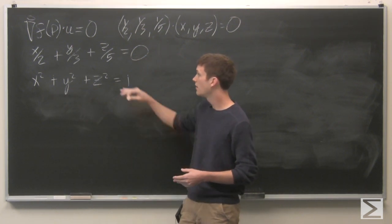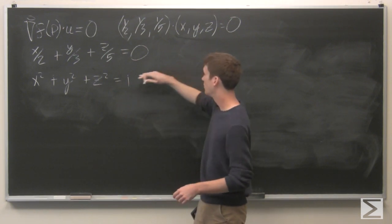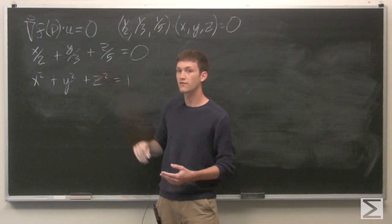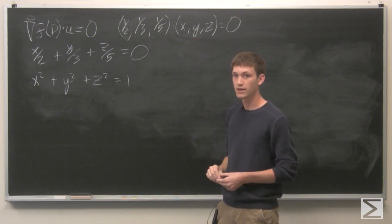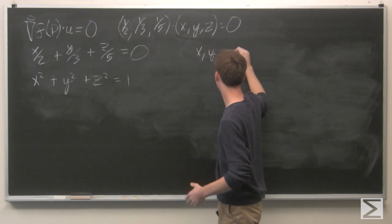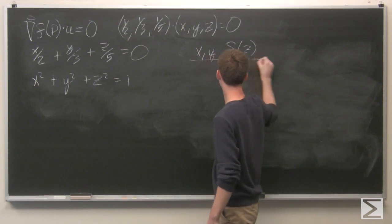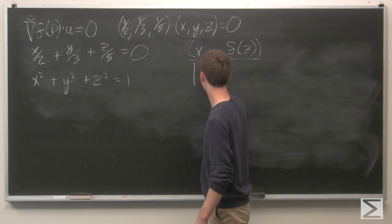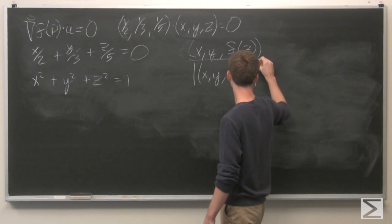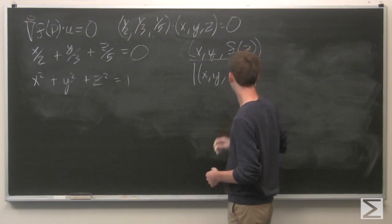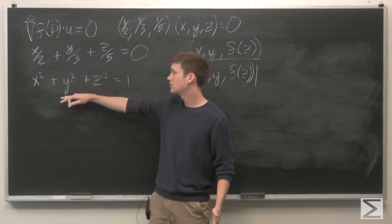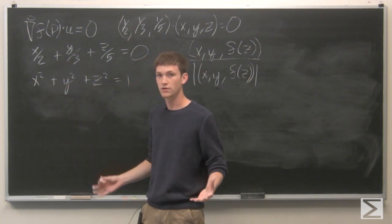We could leave it at that, or we could also solve for one of the variables, say z, plug it into x, y, z, and then take the unit vector. But it's just as simple to say that the directions are given by the intersection of the unit sphere and the plane x/2 + y/3 + z/5 = 0.